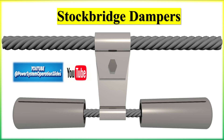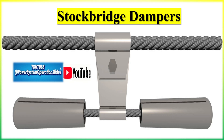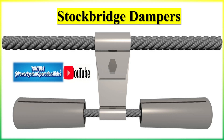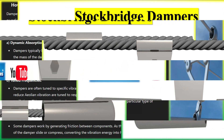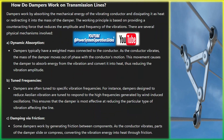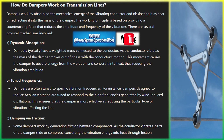Damping via friction: some dampers work by generating friction between components. As the conductor vibrates, parts of the damper slide or compress, converting the vibration energy into heat through friction. There are various types of dampers used on transmission lines, each with different designs and mechanisms to address specific types of vibration.